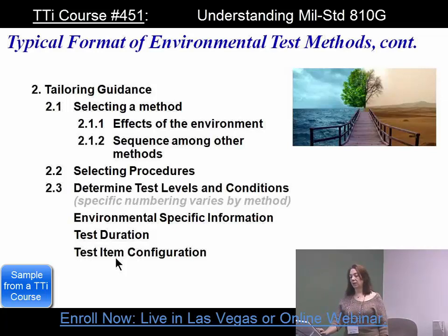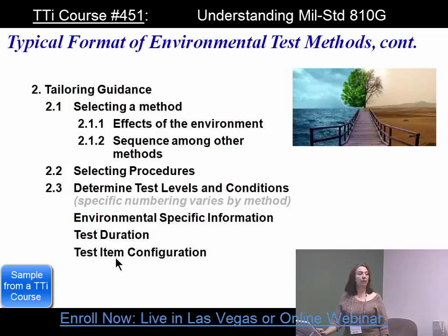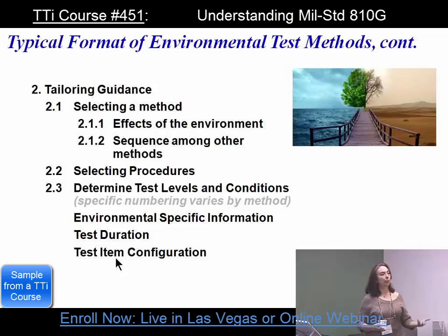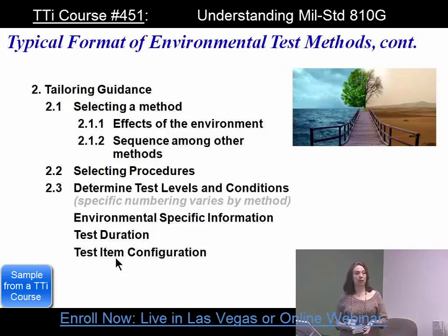You determine the test levels and conditions, and then the numbering varies by method. There may be environmental-specific information, and there will be information on the test duration and the test item configuration — including whether it needs to be in a box or out of a box. If an item can be shipped both in cardboard and a transit case, you test it in both.